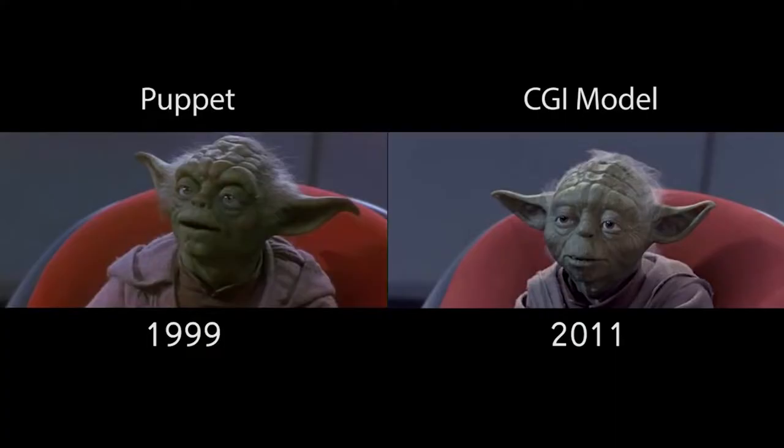What are the puppets? Yoda! Yoda was a puppet, at least in the original trilogy. He was a puppet. Then he was slowly shifted over to CGI. But that basically sums it up.